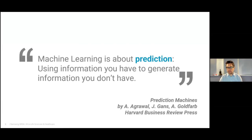So first of all, for life sciences people, what is artificial intelligence? Machine learning and artificial intelligence are effectively synonyms these days. It's about prediction — using information that you have to generate information that you don't have. For instance, information I might have is a photograph of a skin rash or an MRI picture of my brain, and the information I don't have is what the disease is called — is it a benign rash or is it skin cancer?